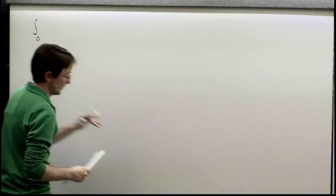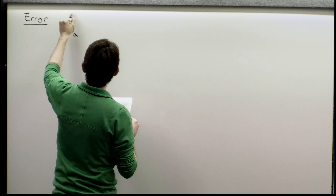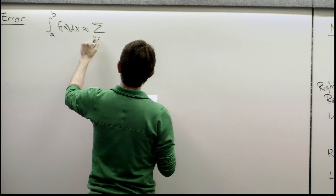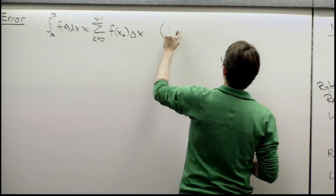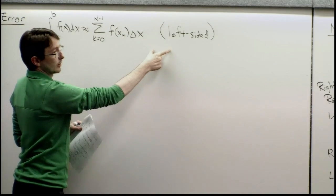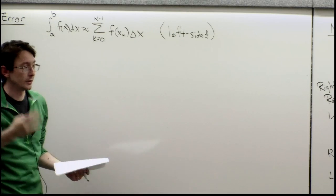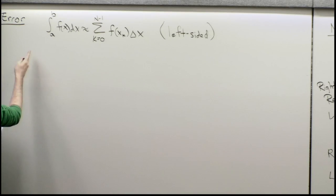Let's go back to the board for error analysis. We have the integral from a to b of f(x) dx approximately equal to the sum from k equals 0 to n minus 1 of f(x_k) delta x — this is my left-sided rule. What we'd really like to know is what is the error. Is that error order delta x cubed, or delta x, or what? We're going to look at just one little dx box — a generic rectangle from index k to k plus 1.